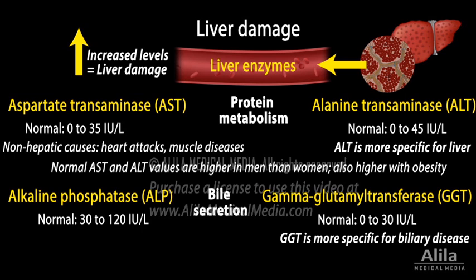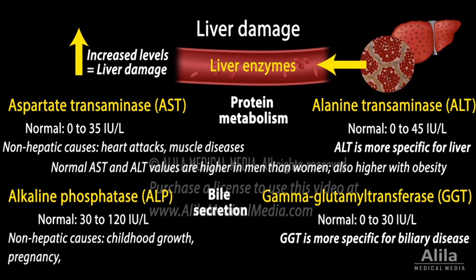ALP is also present in bones and placenta, and its normal level increases during childhood growth as well as pregnancy. ALP elevations may also be due to a number of non-hepatic illnesses, including bone disease, chronic renal failure, congestive heart failure, cancers, and infection or inflammation.